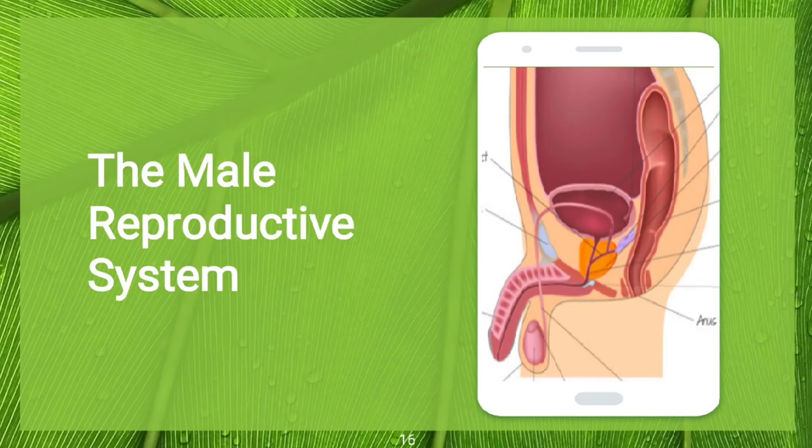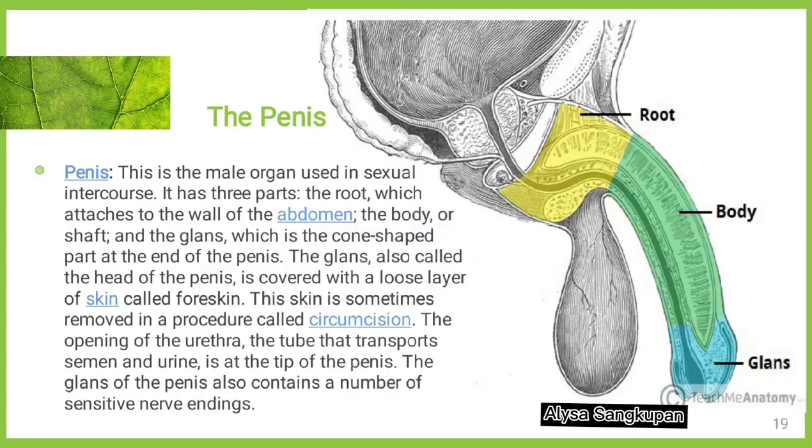The parts are: penis, scrotum, testicles, epididymis, vas deferens, ejaculatory ducts, urethra, seminal vesicles, prostate gland, and bulbourethral gland.